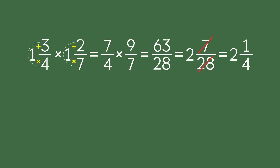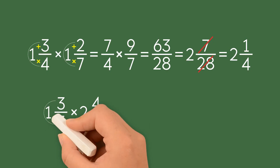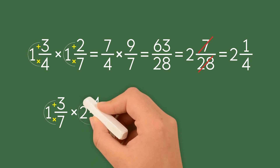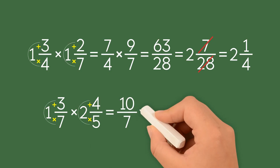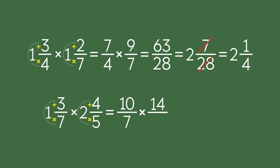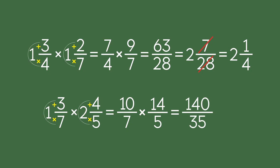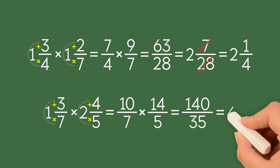Now let's do another example: 1 and 3 over 7 times 2 and 4 over 5. We start by changing the first mixed number into an improper fraction. The numerator is 1 times 7 plus 3, which is 10. The denominator stays the same: 7. Now let's change the second mixed number. The numerator is 2 times 5 plus 4, which is 14. The denominator stays the same: 5. Now we multiply the two improper fractions. We get 140 over 35. We divide and get 4 as our final answer.